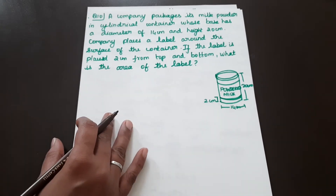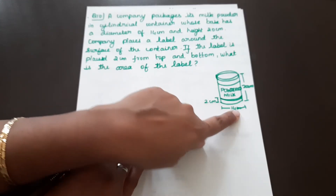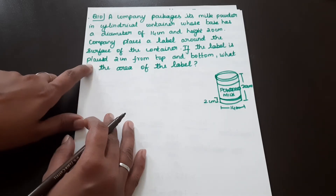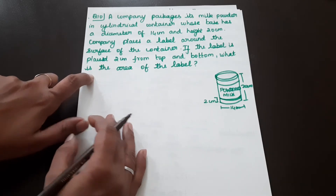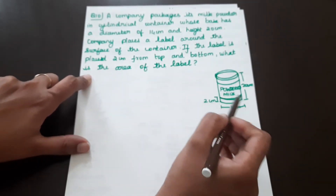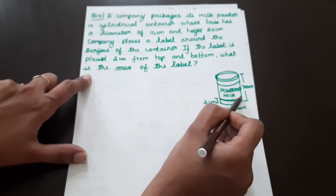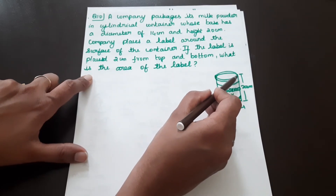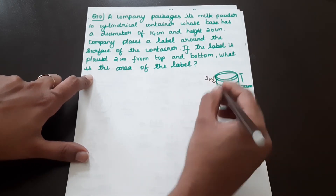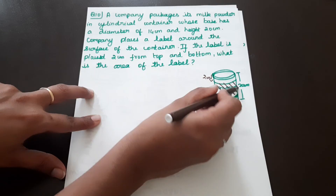Question number 10: a company packages its milk powder in a cylindrical container whose base has a diameter of 14 cm and height 20 cm. The company places a label around the surface of the container. The label is placed 2 cm from the top and 2 cm from the bottom. We need to find the area of the label.